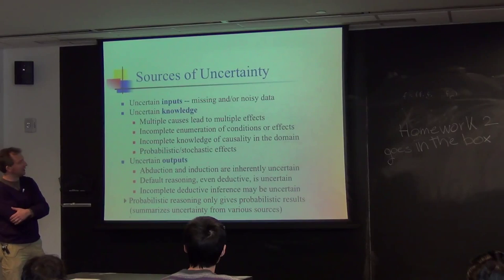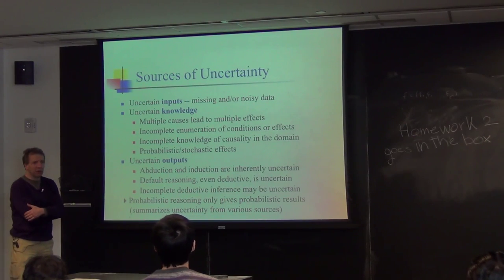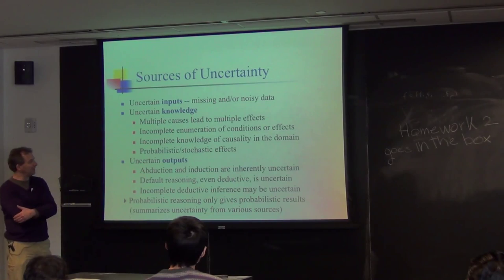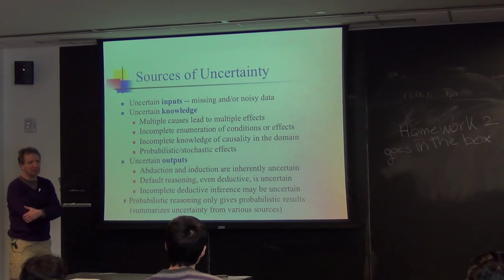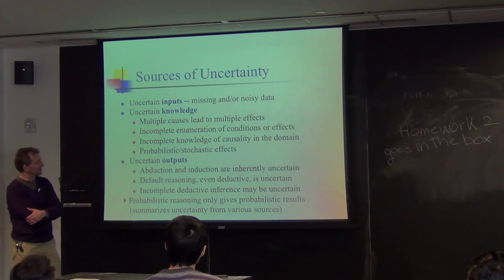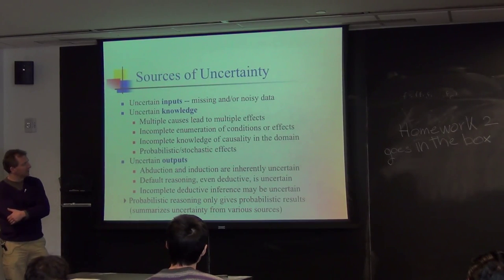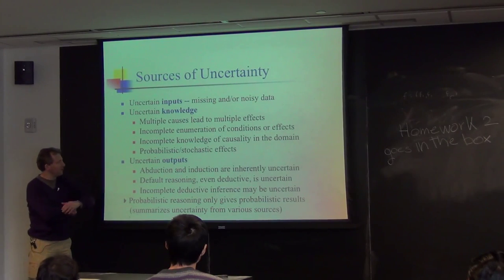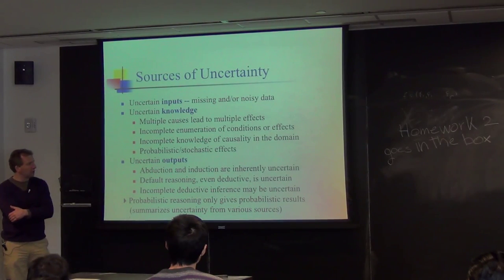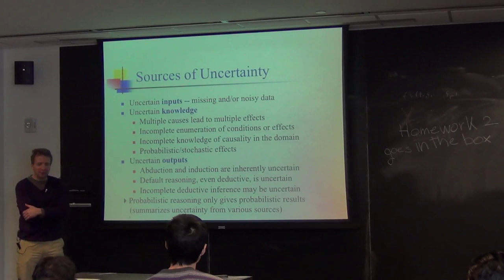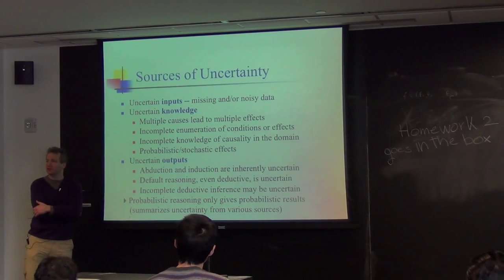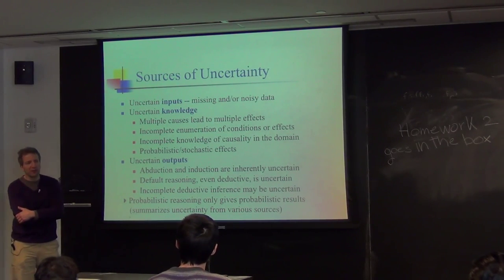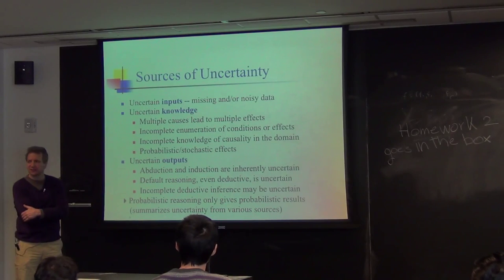There's also incomplete enumeration of conditions and effects — what's actually happening, with only partial knowledge. Sometimes they refer to it as partial observability. There's also incomplete knowledge of causality in the domain. Also, if you only have the outputs and you're trying to reason about causes, then you're going to apply something like abductive reasoning.